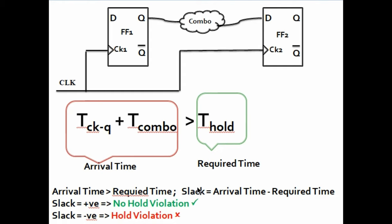So, what will be the slack? Arrival minus required. And if arrival time is greater than the required time it means slack is positive, so no hold violation. If arrival time is less than the required time there will be a hold violation. If arrival time is less, it means the data is coming too fast — that is why hold violation will occur. So, we can say if the data comes too early, then hold violation occurs.